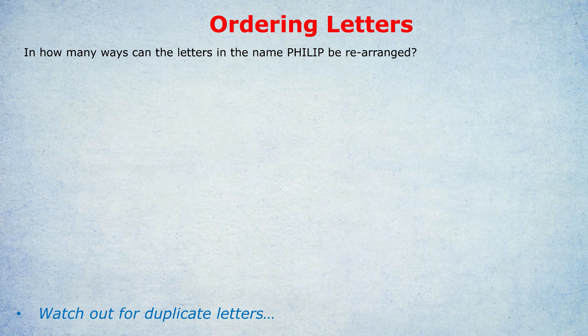Some of you may think it's just as simple as saying we have six letters and therefore the answer is six factorial. The first letter can be any of six, the second letter can be any of five, and that's where we get six times five times four times three times two times one, six factorial. Why is that not the correct answer?